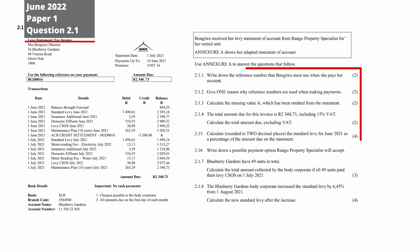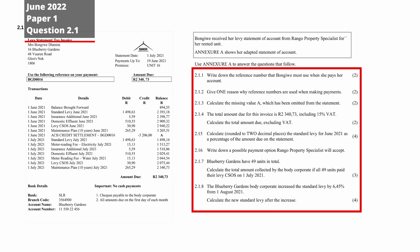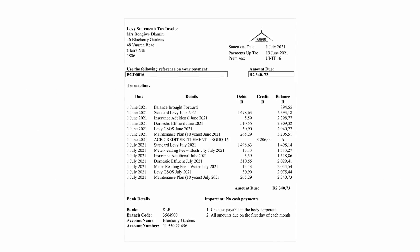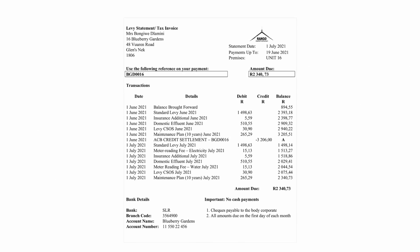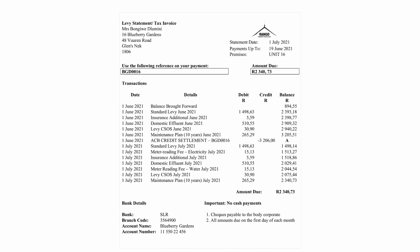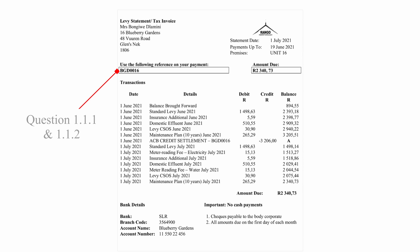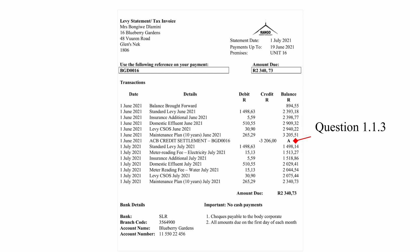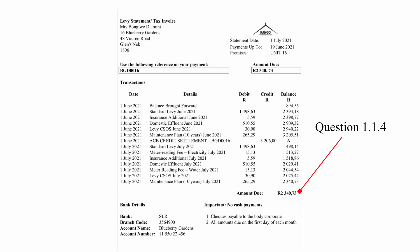Question 2.1 consists of eight finance questions designed to assess your ability to interpret financial statements. You are given a levy statement for a rental property in Annexure A. The levy statement shows the reference that this person must include in the payment information when making payment to the body corporate. There is a missing value labeled A, which is the balance after this payment was made.